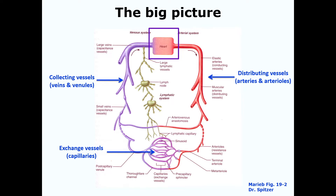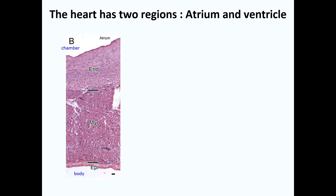The heart is a folded endothelial tube whose wall is thickened to act as a regulated pump, and this pump is the primary determinant of systemic blood pressure. Histologically speaking, the heart has two regions which differ in structure, again relating to their specific functions.